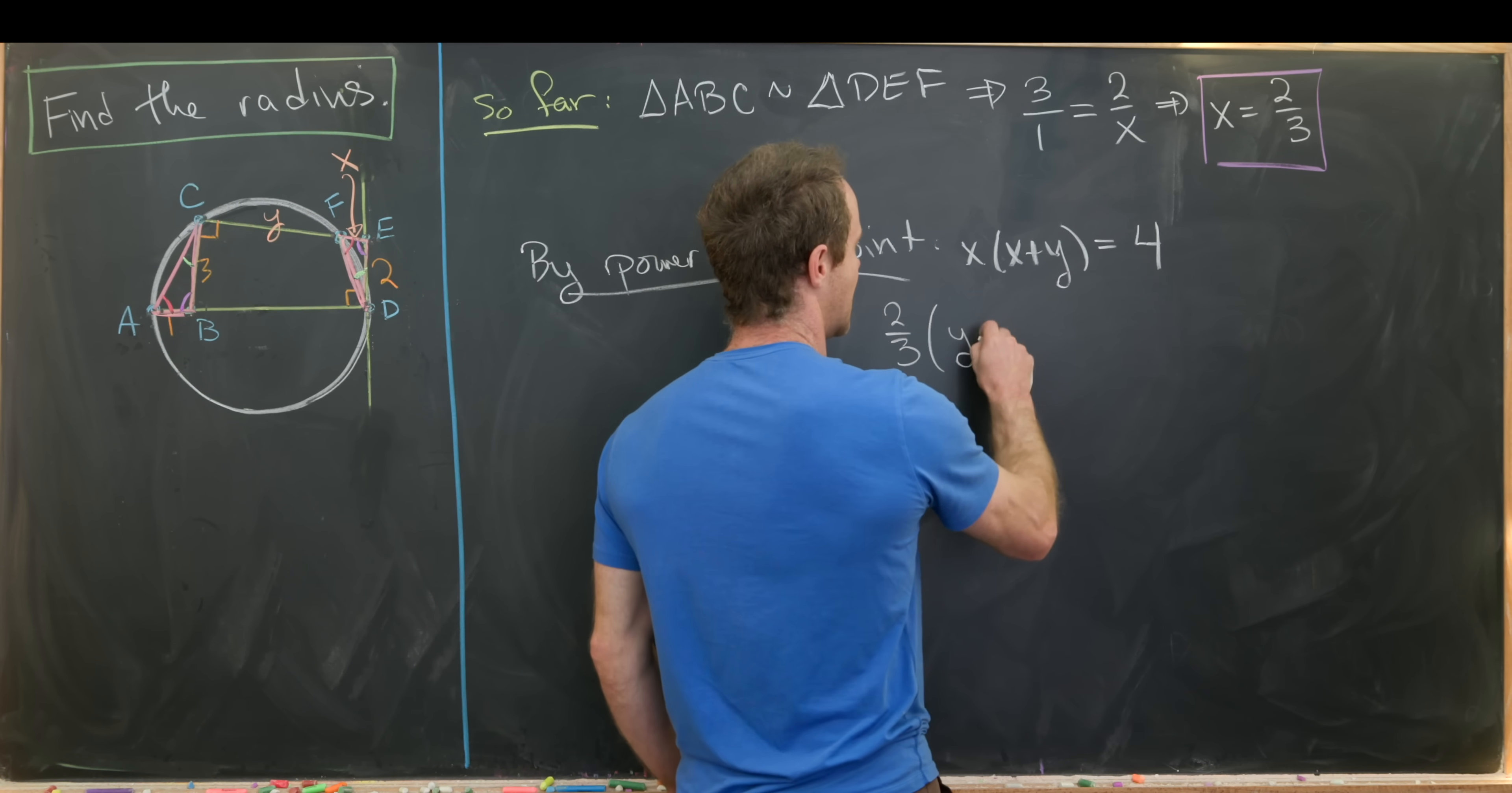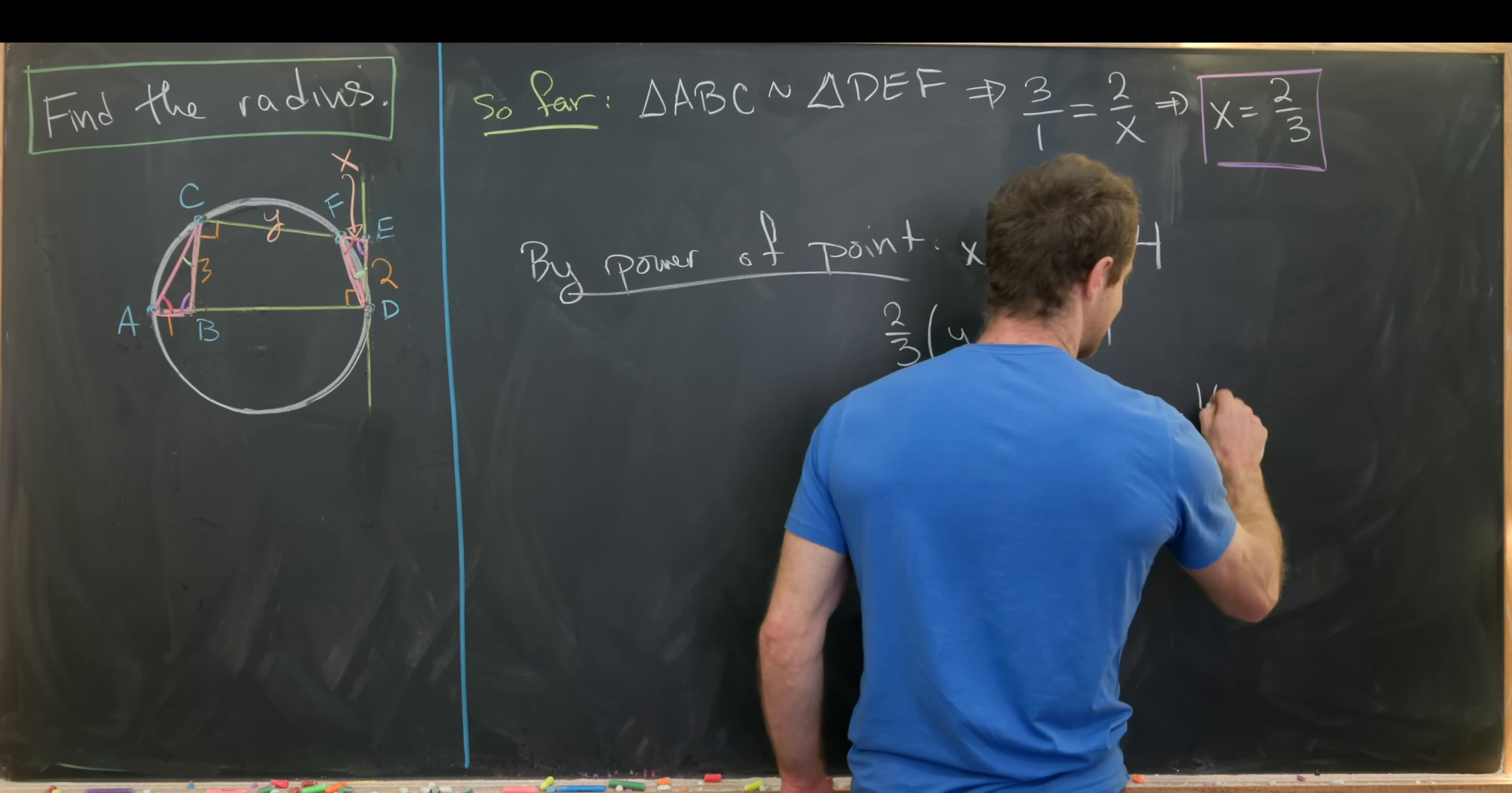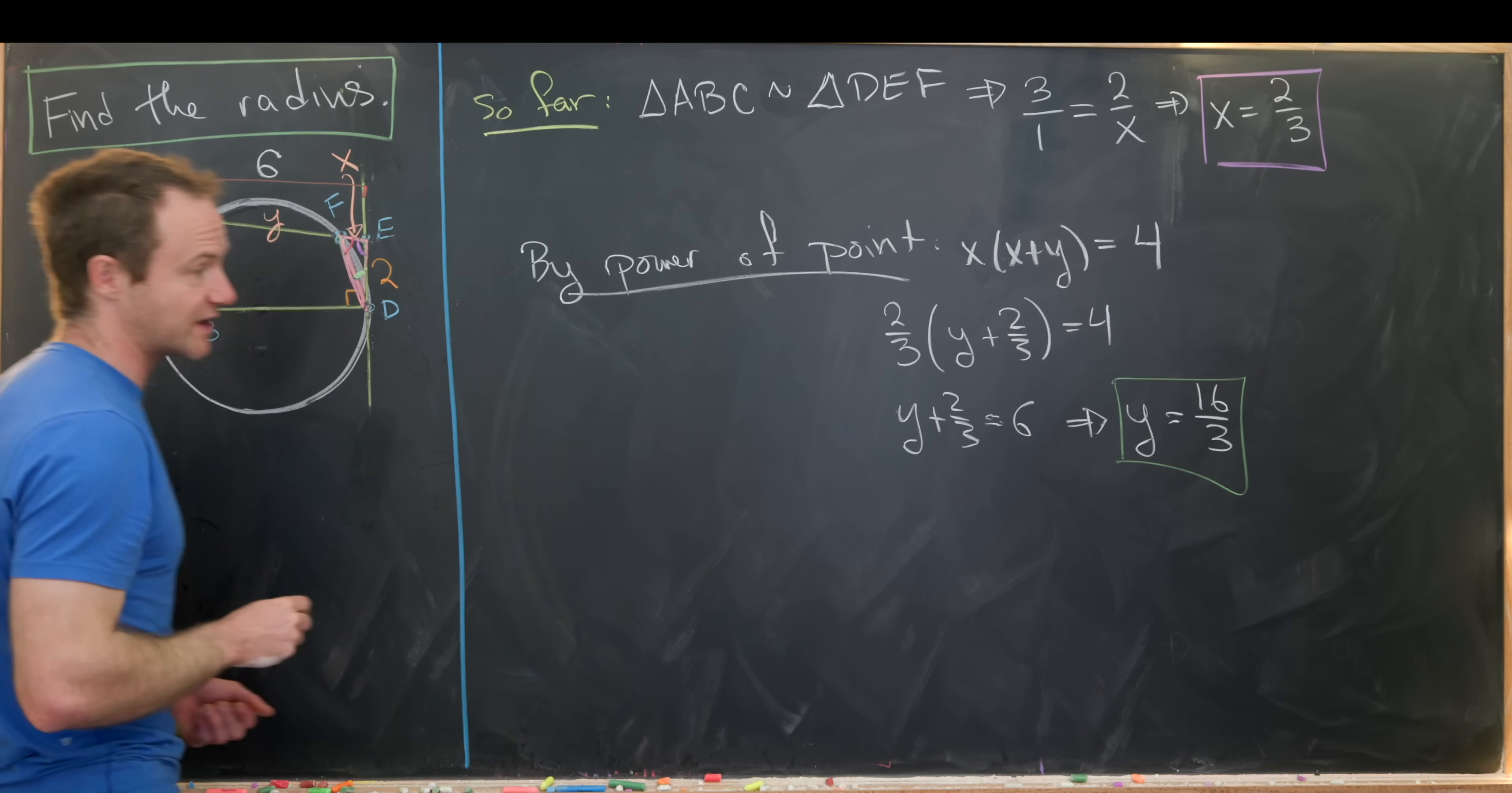So that leaves us a really easy equation to solve for Y. So we have 2 thirds, and then Y plus 2 thirds is equal to 4. And so that gives us Y plus 2 thirds is equal to 12 divided by 2, which is 6. And so that means that Y is equal to 6 minus 2 thirds, which is 16 over 3. But in fact, maybe the most important thing here is the whole of C to E is equal to the number 6. So that's going to be a pretty important measurement.